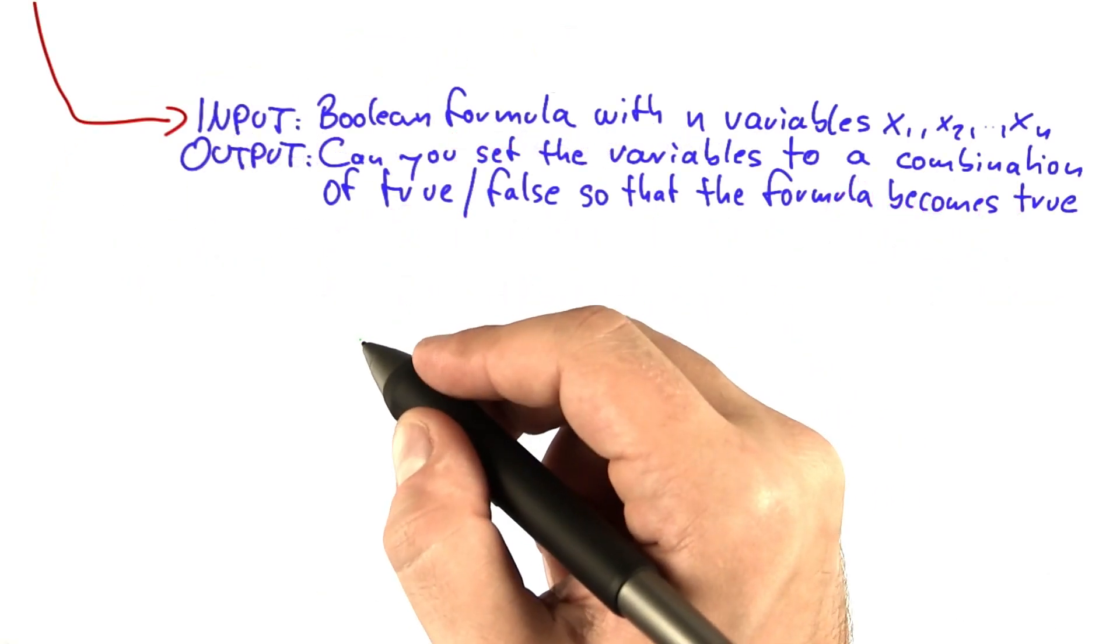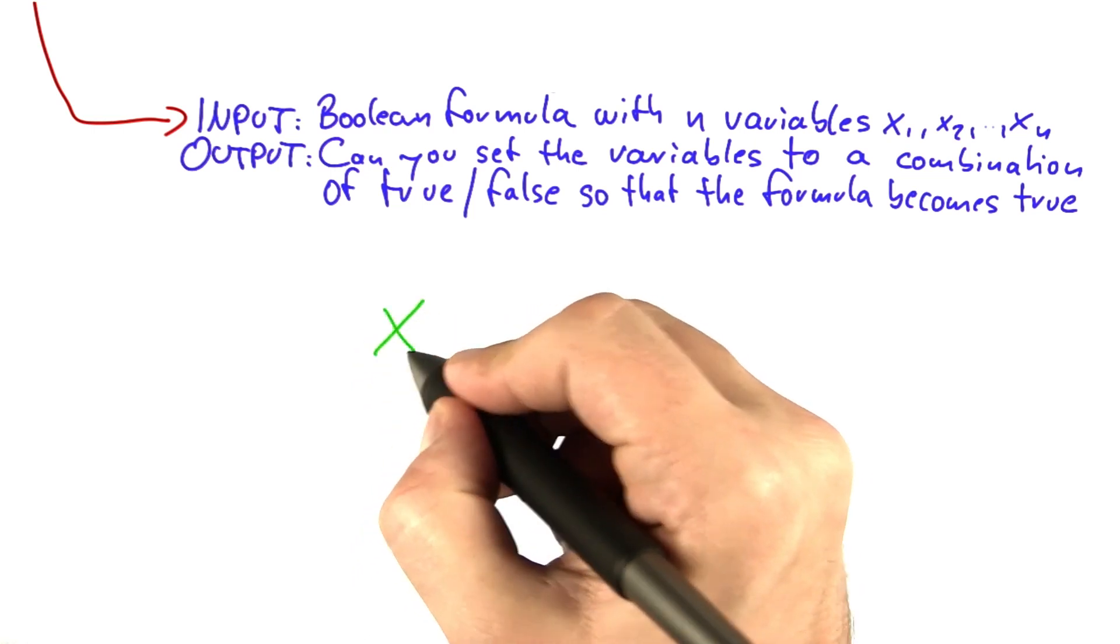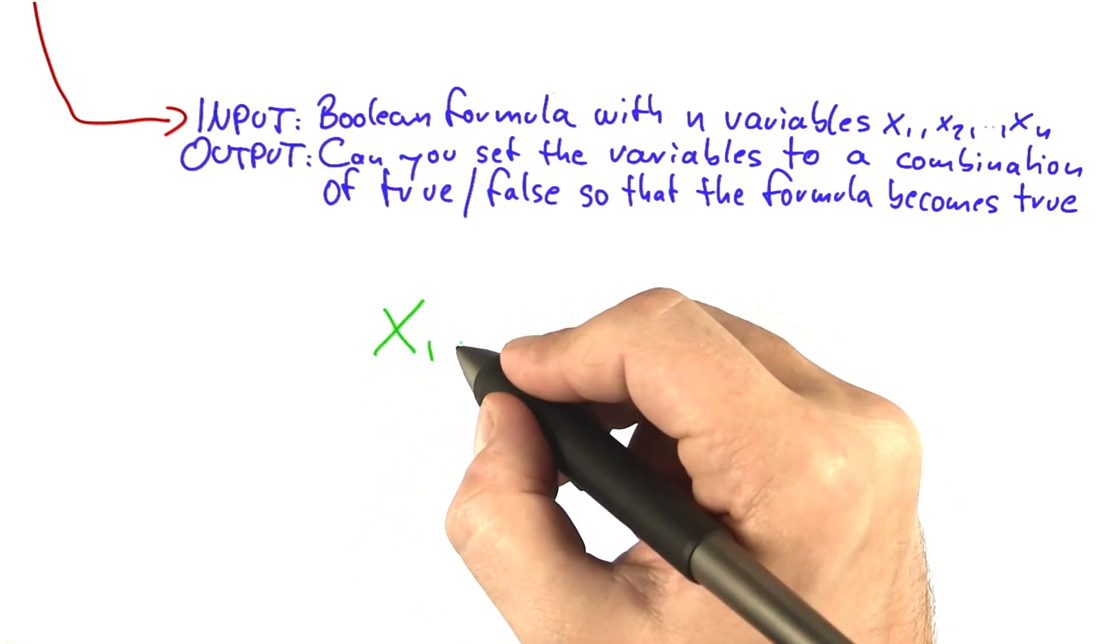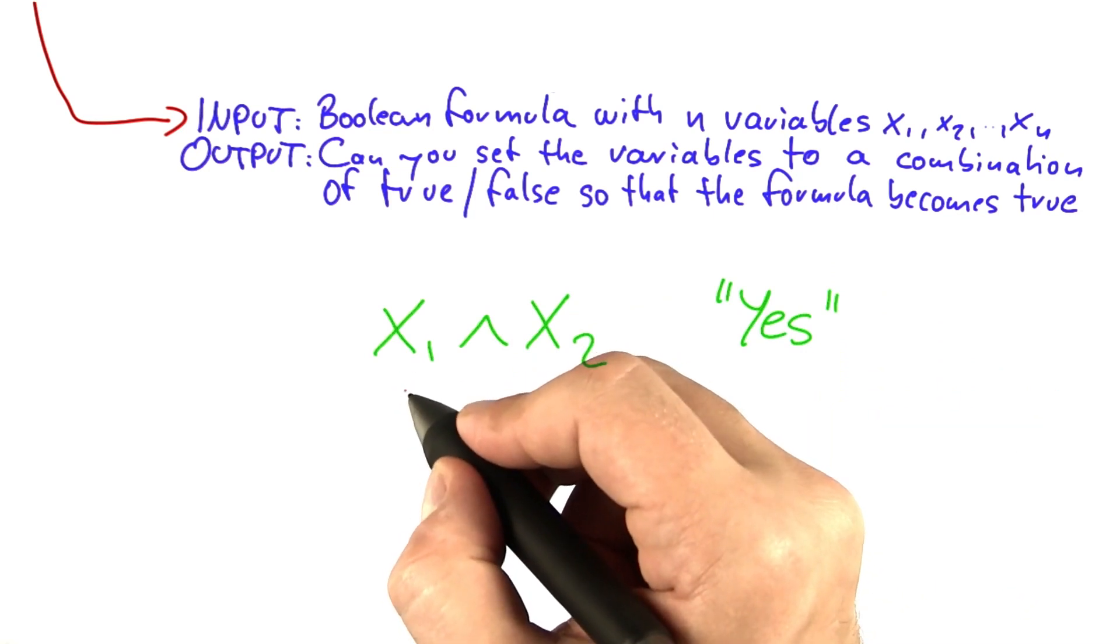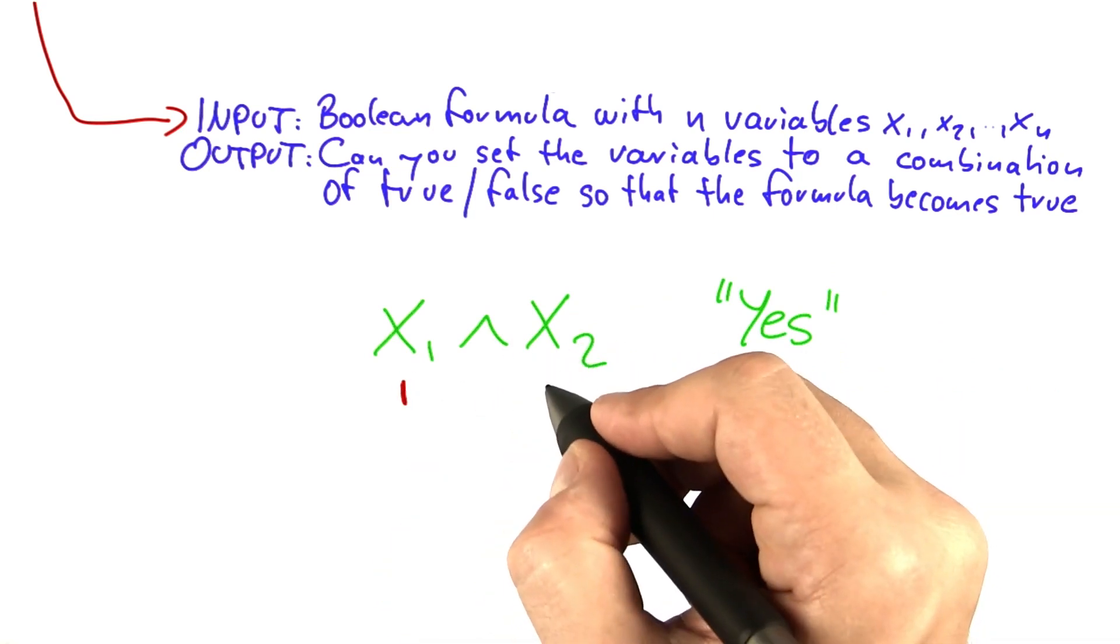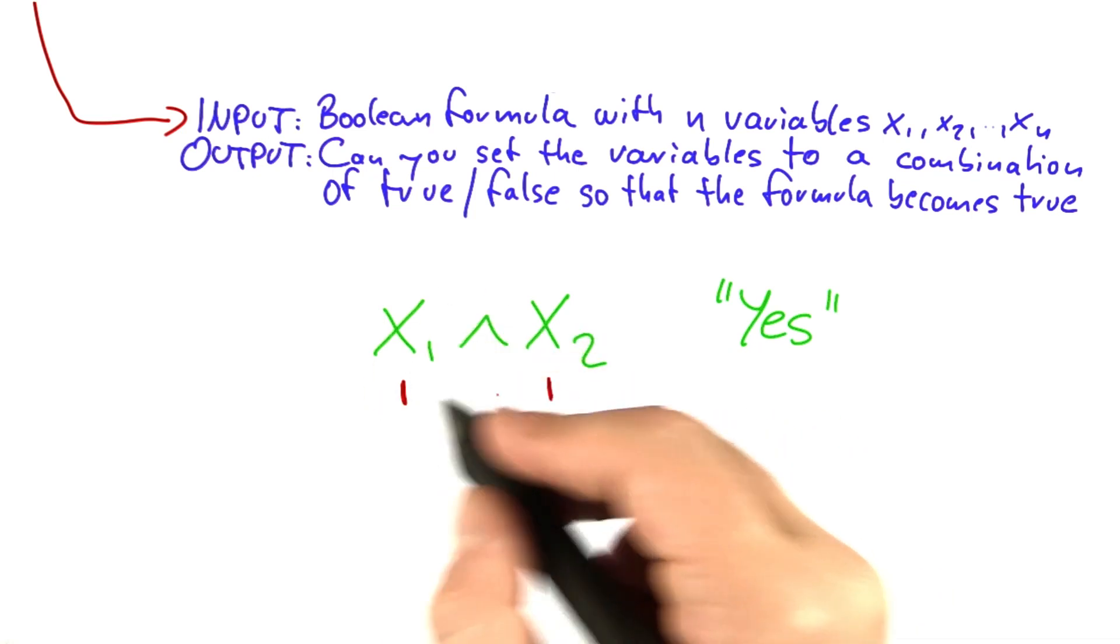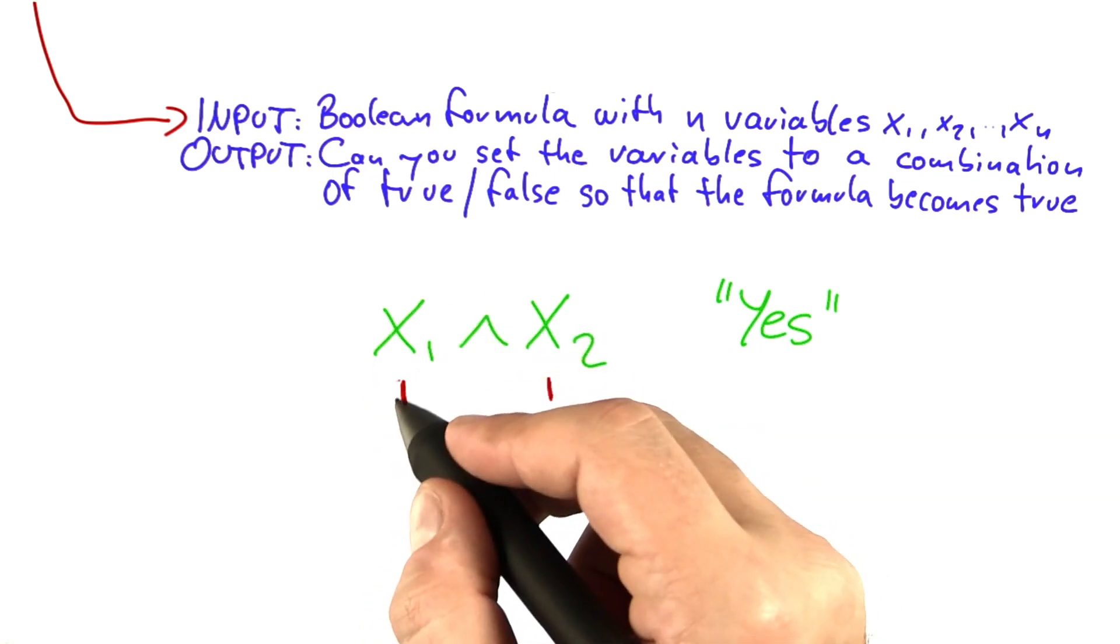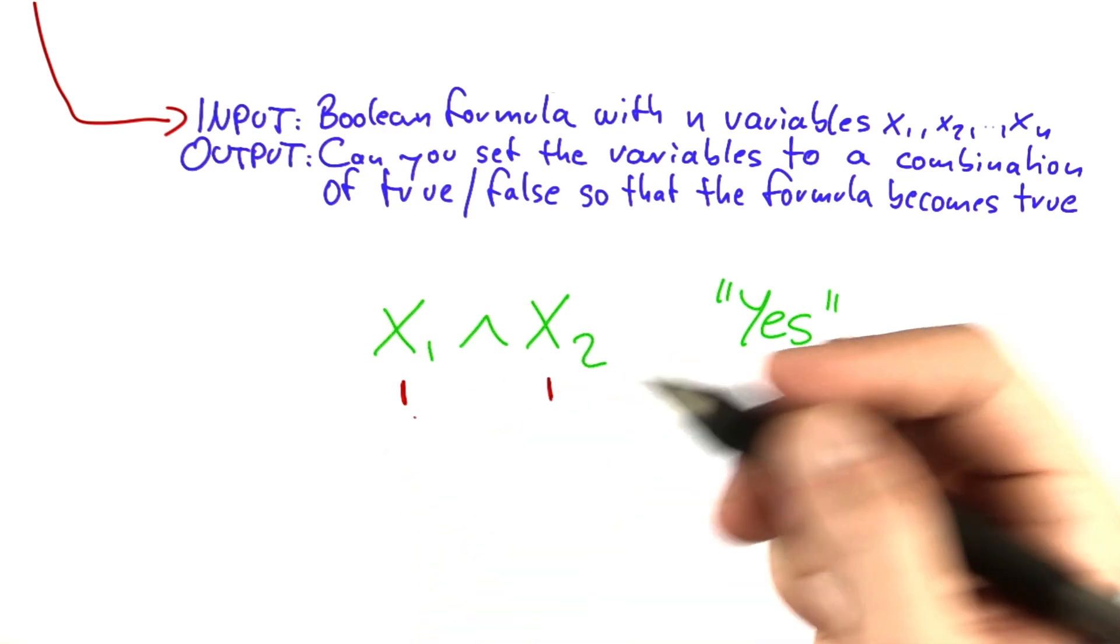For example, if we're given a very simple Boolean formula such as x1 and x2, then the answer to SAT would be yes because you could set x1 to true and x2 to true, and then the whole formula would also evaluate to true because you have 1 and 1, which is true or 1.